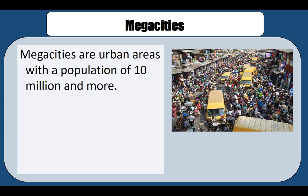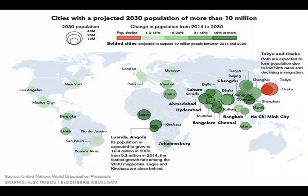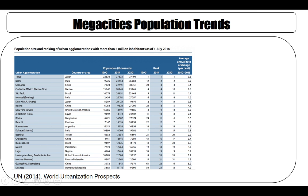Mega cities are urban areas with a population of 10 million or more. Here we are showing many cities that have 10 million or more people and their projected population. By 2030, North America will continue having three mega cities — Mexico City, New York, and Los Angeles — but Asia will have most of the mega cities, as you can see in this map.